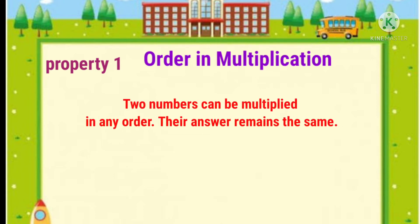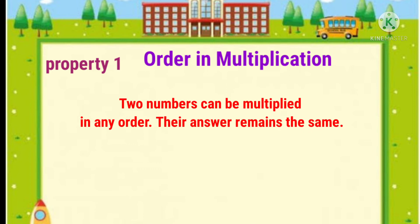Two numbers can be multiplied in any order. Their answer remains the same. For example, four twos are eight. If we change the order of the numbers, that is four and two and write two into four, that will also be equal to eight. It means four into two is equal to two into four.